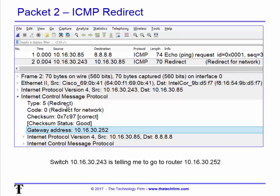Looking inside packet number two: there's the ICMP header showing it's a redirect — type 5, redirect for a network. In the written piece I provide codes 0 through 3 that this references. The important part at the bottom tells me the gateway address I should be using: 30.252. There's also the original header included. If you don't see that original header, it can happen with some hosts that don't include a copy of the original packet. More likely, if it's missing, you may have packet slicing enabled. Make sure you have 70 to 80 bytes captured and you'll see this header.